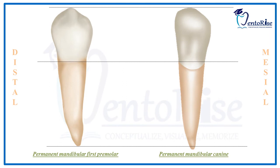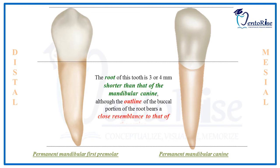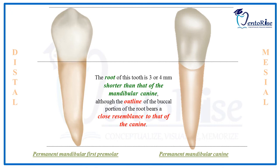The root of the permanent mandibular 1st premolar is very similar to that of the permanent mandibular canine, except in dimension — the root is slightly shorter than that of the mandibular canine.